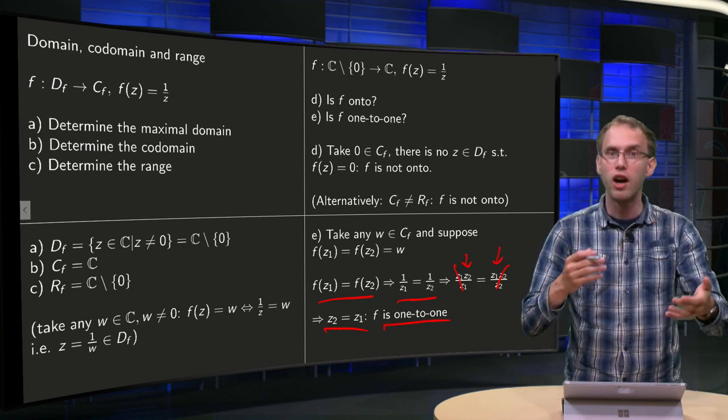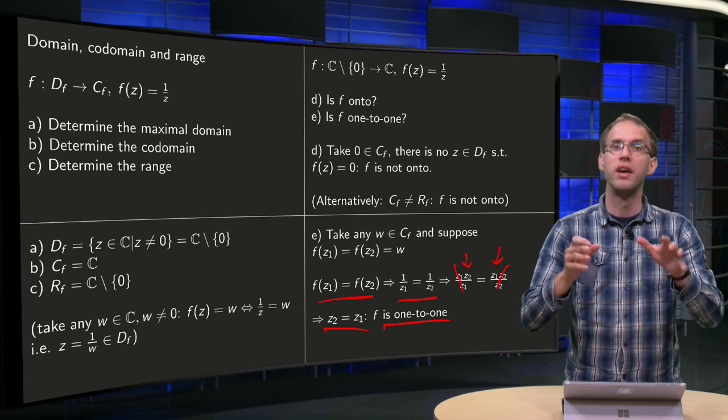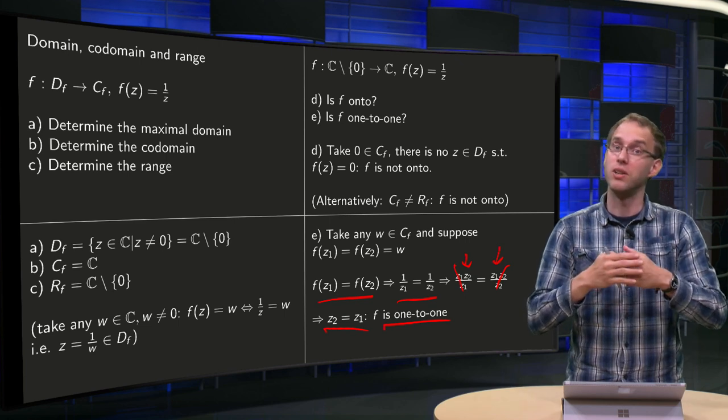So you see all those arguments for domain, codomain, range, onto, one-to-one, those concepts work exactly the same as in the real case.